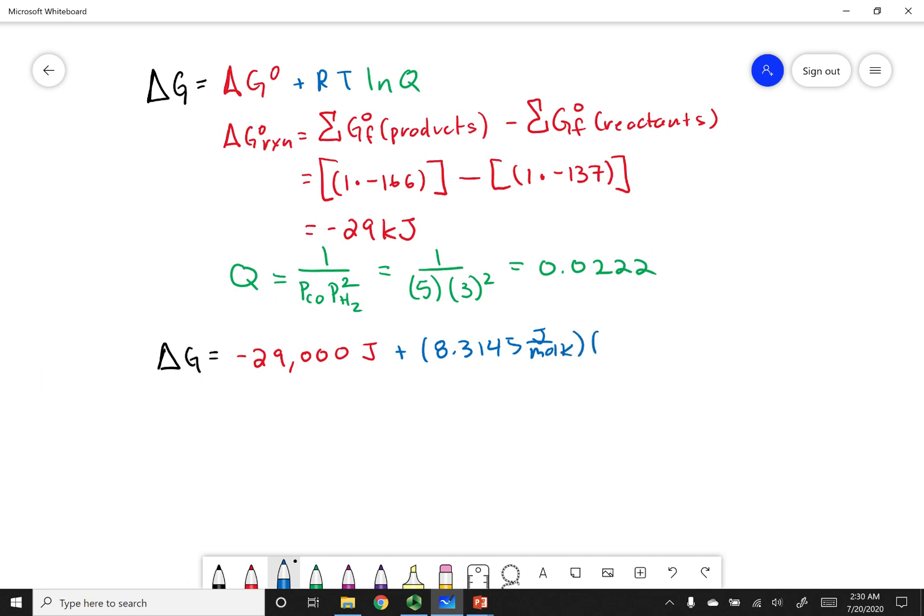Now I'm going to go ahead and times this by the temperature. The temperature here is 25 degrees, and I'm going to add 273 to it, because I want this in kelvin. And then lastly, we're going to take the natural log of our Q, which we just calculated out to be 0.0222. Now if I go ahead and run this calculation out, my delta G is going to be negative 38,000 joules. Now I'll let you know, delta G's are usually measured in kilojoules. So let's go ahead and divide that by 1,000, and this becomes negative 38 kilojoules.